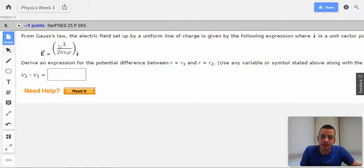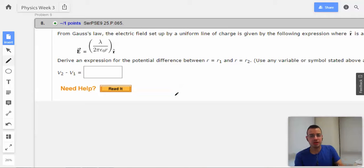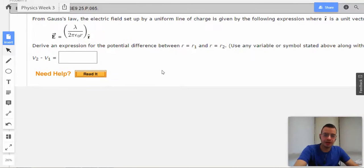We could use k here because 1 over 4 pi epsilon dot equals k, but they want us to use epsilon dot, which is fine. Alright, so this is going to be straight formula and math. Zero conceptual understanding.